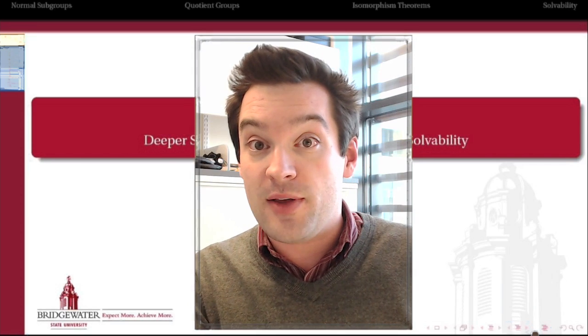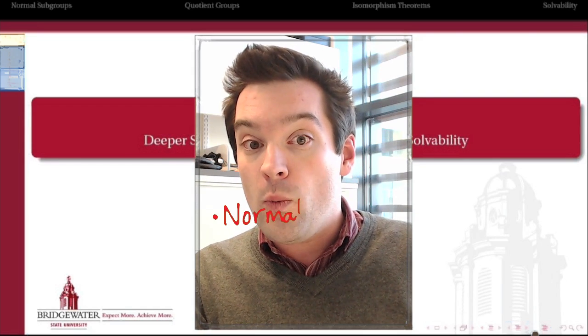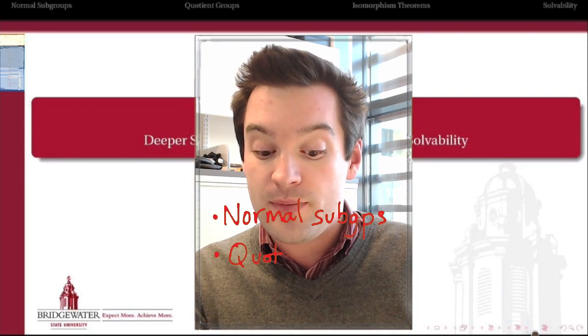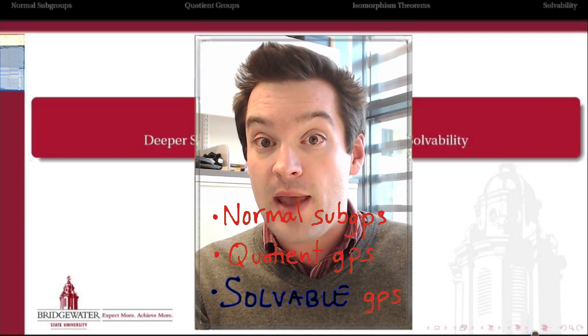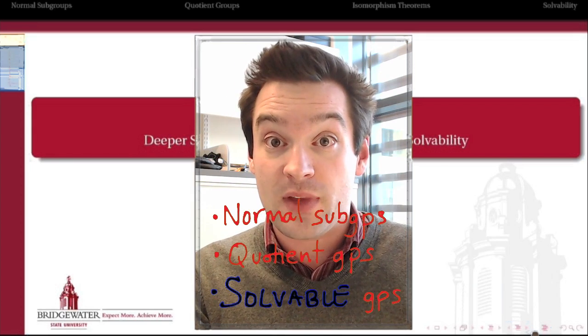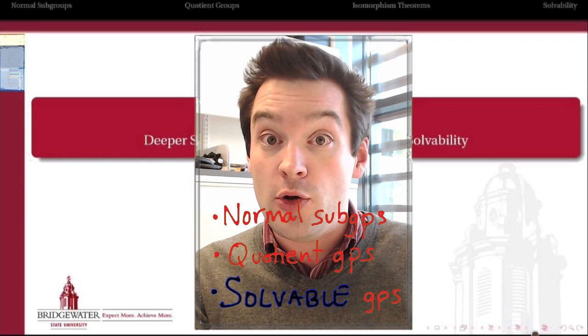So three topics to cover. First of all, what is a normal subgroup of a group? What is a quotient of a group by one of its normal subgroups? And what does it mean for a group to be solvable? Let's get started with topic number one, normal subgroups.